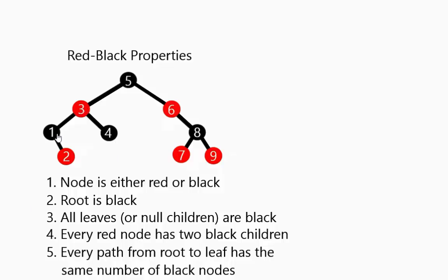Every red node has two black children. So this one has the four and the one. The six has the eight and the black null child here.